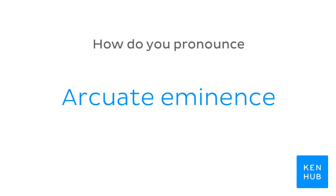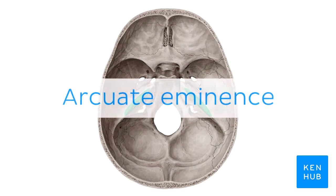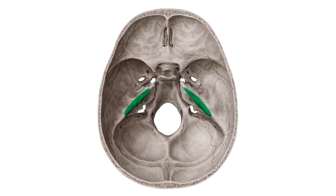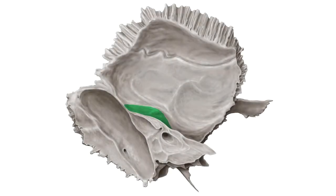How do you pronounce... Arcuate eminence. Arcuate eminence. And to help you memorize this term, here are some additional images. We selected them for you from our Atlas of Human Anatomy, showing this structure highlighted in green.